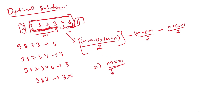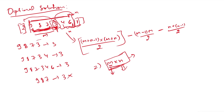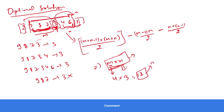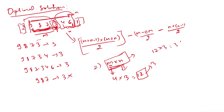M is the distance from the element to its next smaller element on the left, and N is the distance to the next smaller element on its right. So the number of subarrays where 3 is the minimum is M×N. For our example, M=4 and N=3, so there are 12 subarrays whose minimum is 3. That means 3 contributes 3×12=36 to the final answer.